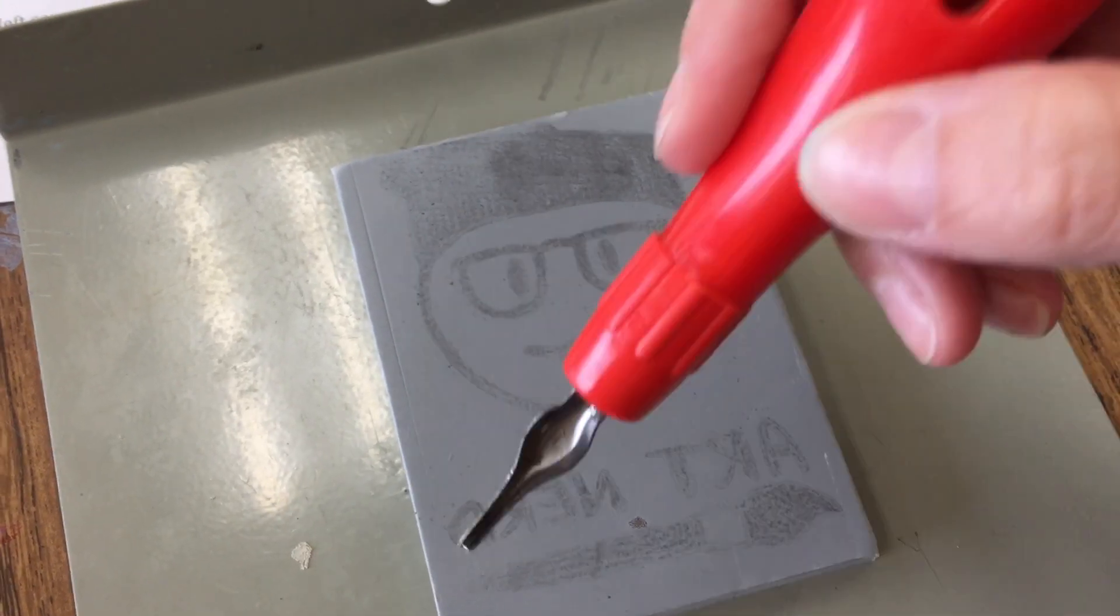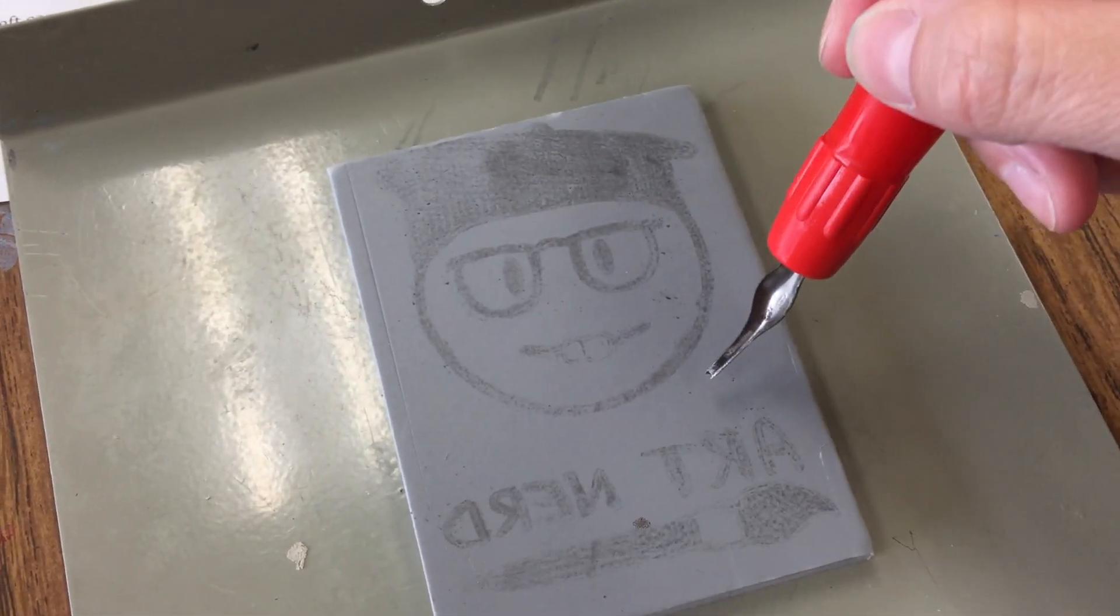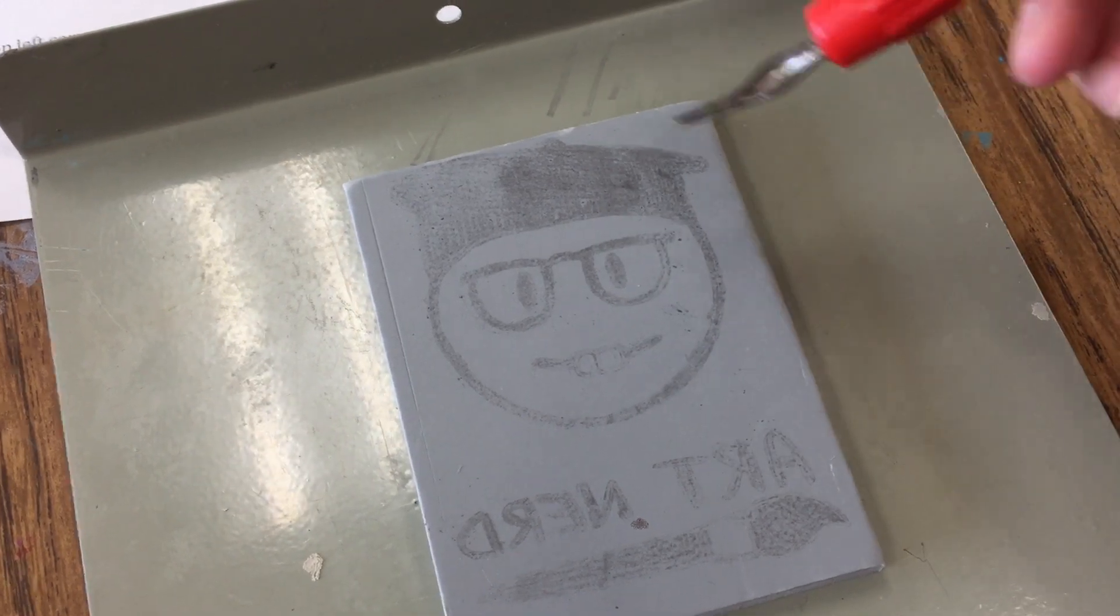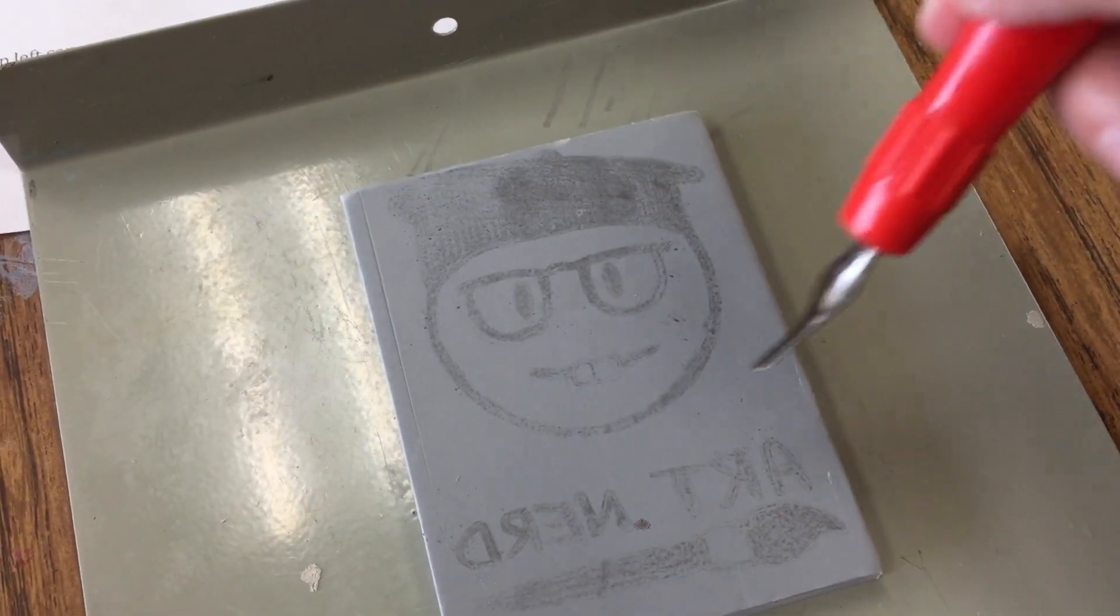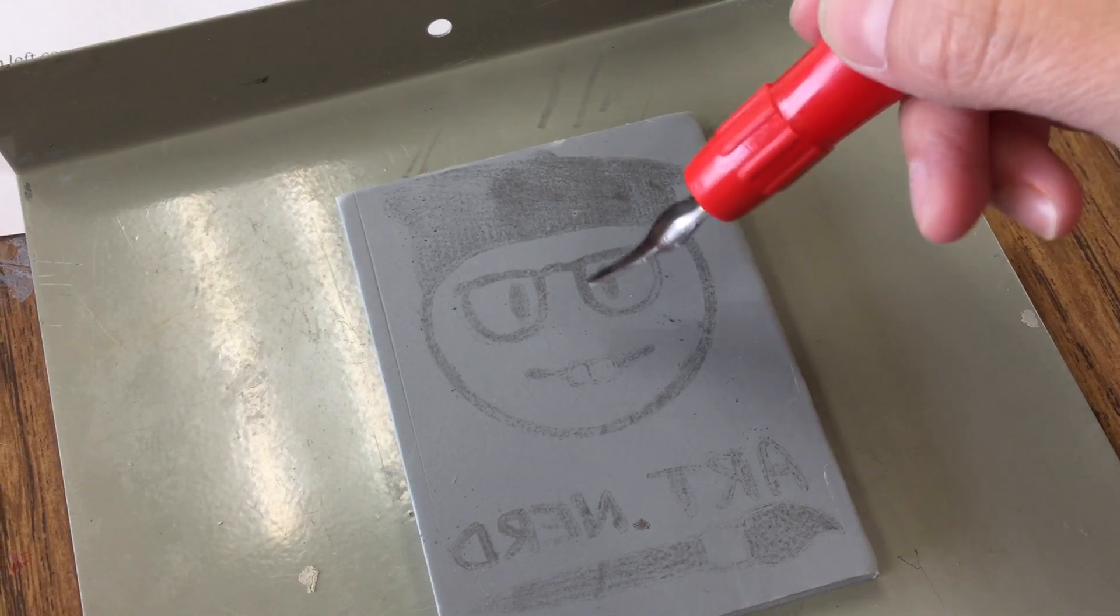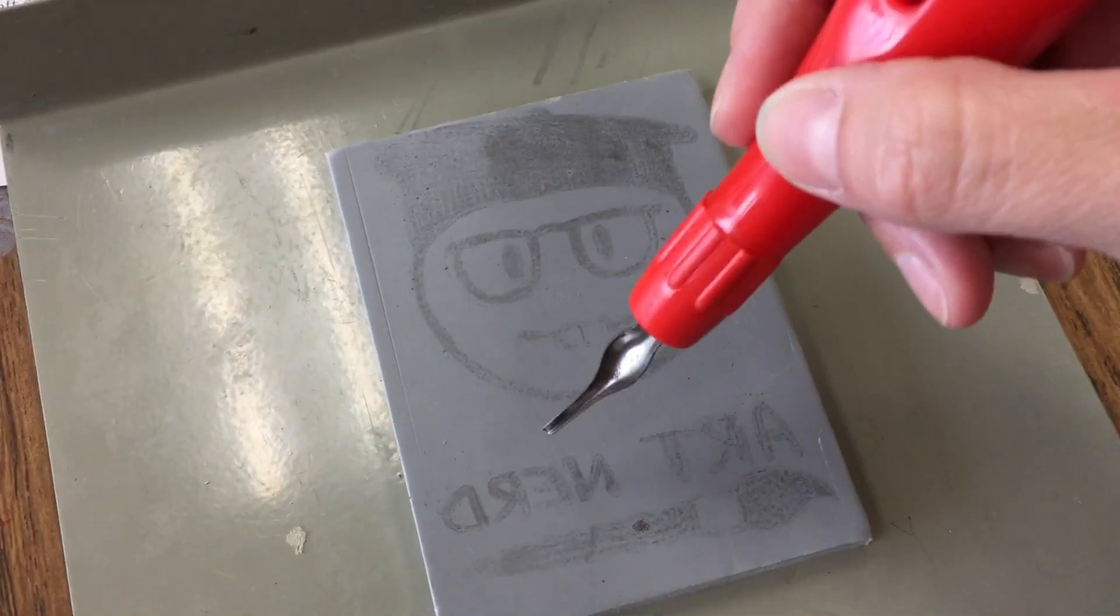You need to make a decision. Anywhere that there is graphite you need to leave or take away. In this case I'm going to take away where there's no graphite and I'm going to leave the graphite there.